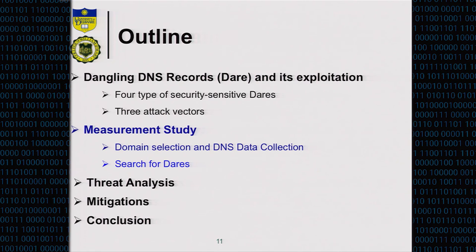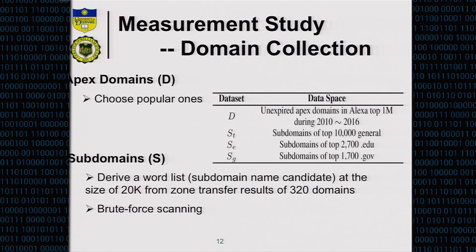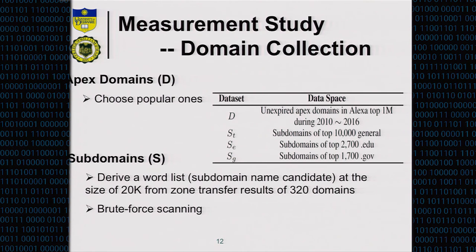Now for the measurement study: we show the domain selection, DNS data collection, and the measurement results showing how widely spread this problem is. We try to choose popular domains, because if the domain is not popular, even if the domain name was hijacked, very few people visit it and nobody cares. We focus on the top popular ones. We have four datasets: all unexpired Apex domains from the Alexa top 1 million, and three subdomain datasets.